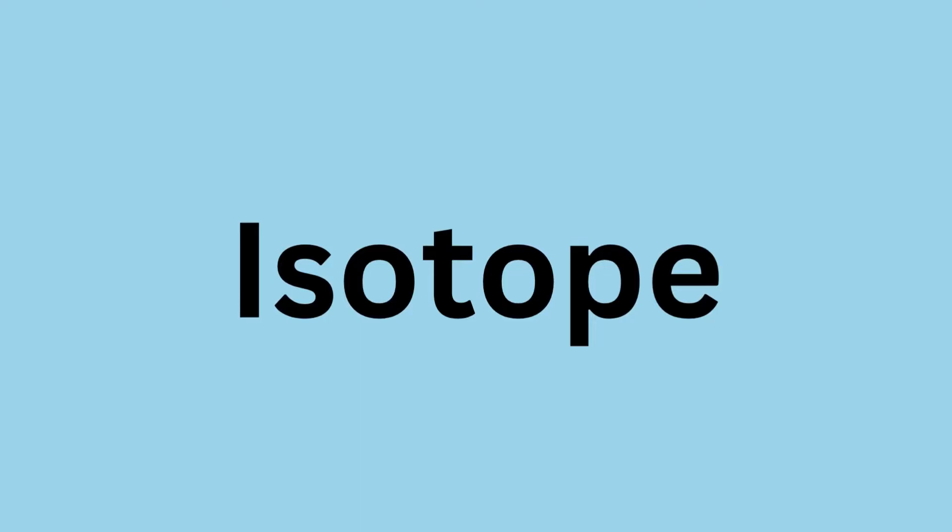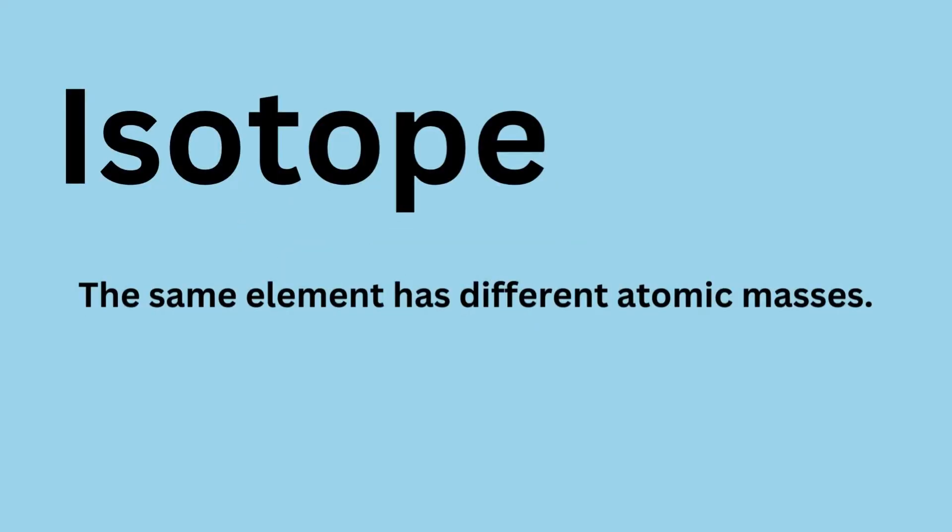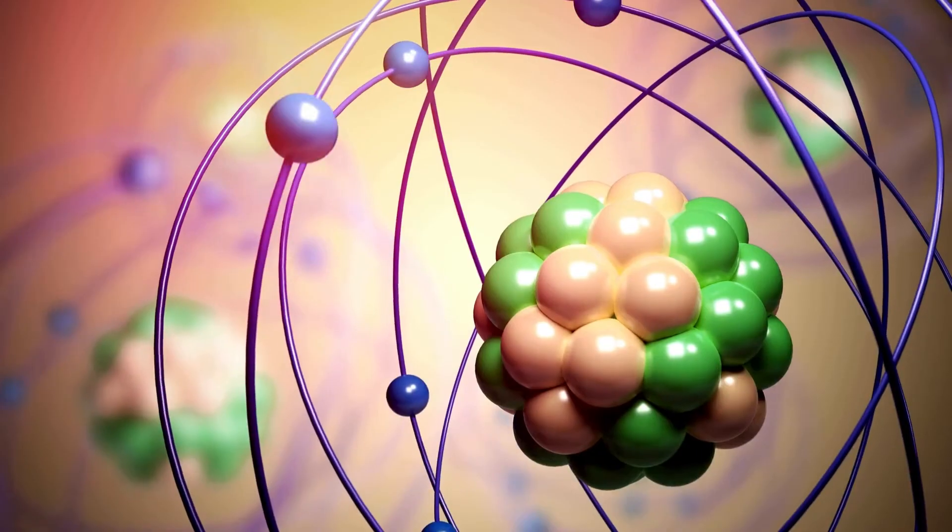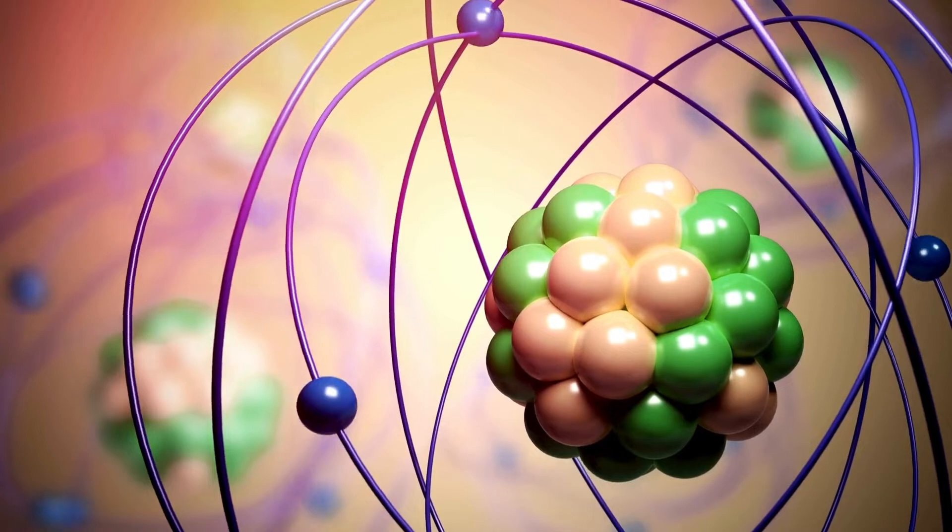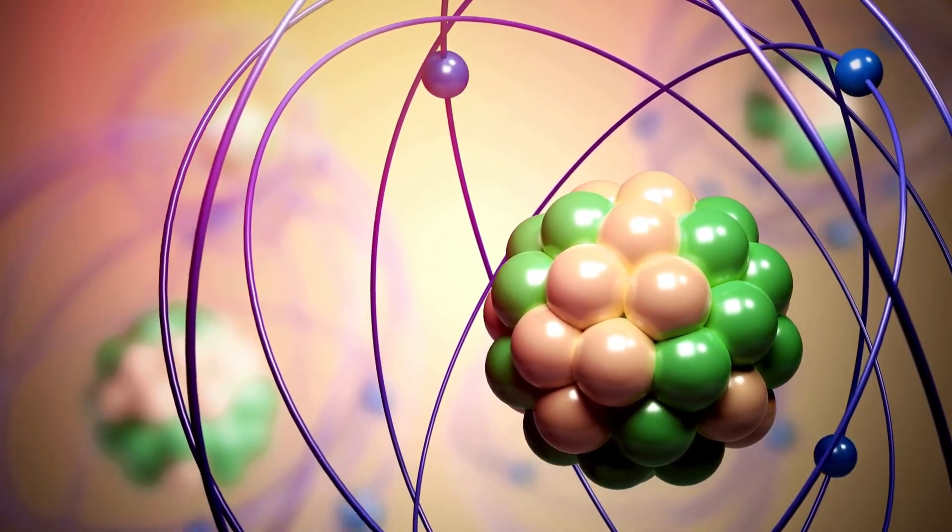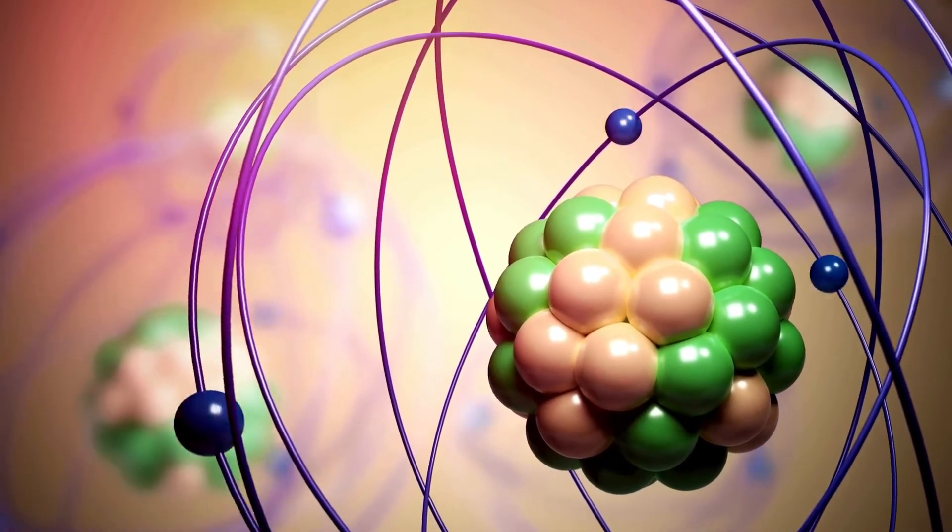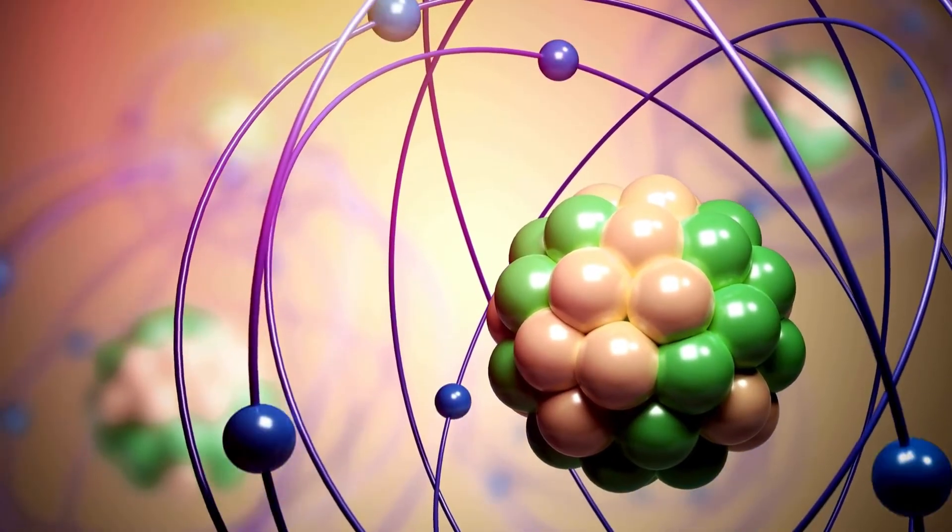An important definition we need to know before we dive in is isotope. An isotope is when the same element has different atomic masses. For example, carbon on the periodic table normally has a mass of 12, but there are variations of carbon where it has a mass of 13 or 14. These variations are what we call isotopes.